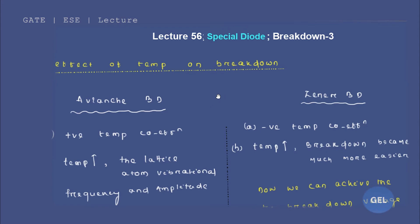Hi, welcome to JL Gate ESC lecture. We are in lecture number 56 of EDC, now in the third module — the Zener diode. This is the third and final video lecture for the breakdown chapter. After this video lecture we'll get into the tunnel diode concept. In this video lecture we are going to analyze how avalanche breakdown and Zener breakdown are affected by variation of temperature.